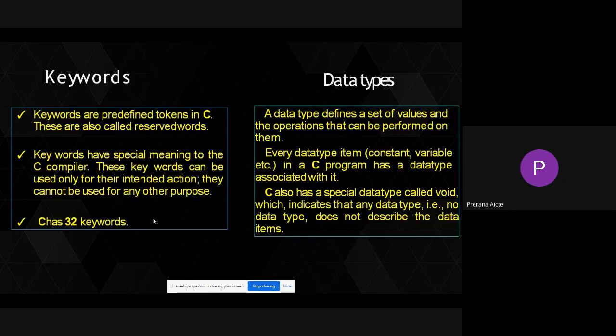Some examples of keywords are: if, else, int, main, void, auto, extern — these different types of keywords we have. That is the first token — one meaningful unit.